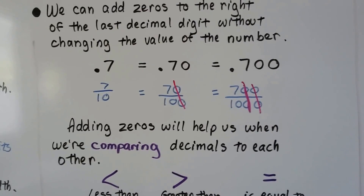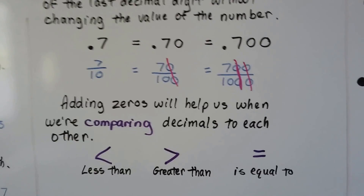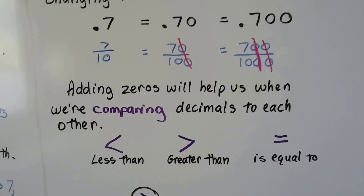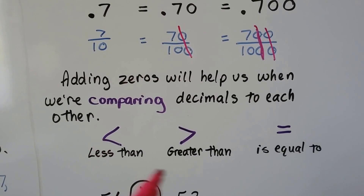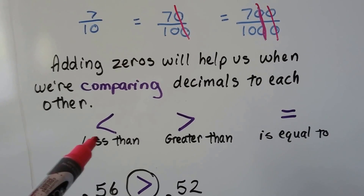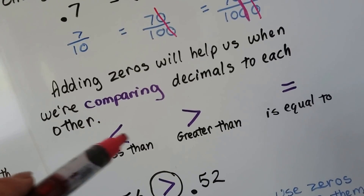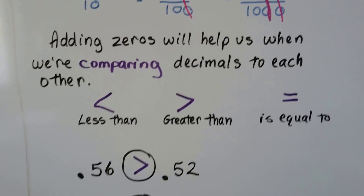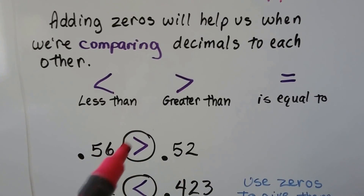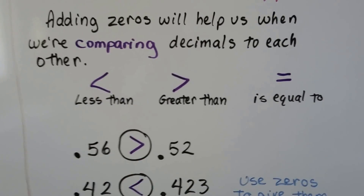By the time we're done with lessons 8 and 9, you'll hopefully understand this. Adding zeros will help us when we're comparing decimals. This is a less than sign, this is a greater than sign, and that's the equal to sign. You can remember that this is less than because it almost looks like an L for less than. So if we had 5 and 600 thousandths and 5 and 200 thousandths, 5 and 600 thousandths is greater than 5 and 200 thousandths.